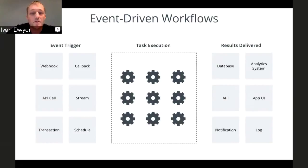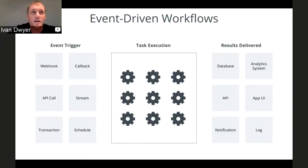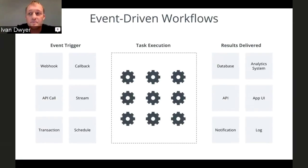Direct API calls: within your application, you can just hit a task endpoint — it's a simple API call to trigger a workflow. When dealing with IoT devices, maybe a sensor hits an API endpoint when it captures an image or triggers something. Stream processing is another interesting one: streams can kick off a continual workflow of processes, passing more and more data through. Transactions could just be an API call, and scheduled tasks are something that happens regularly.